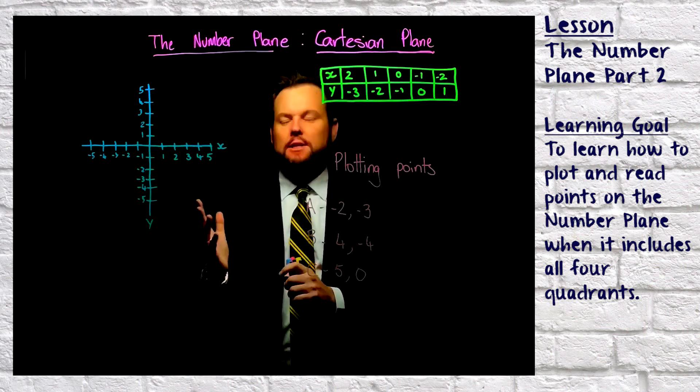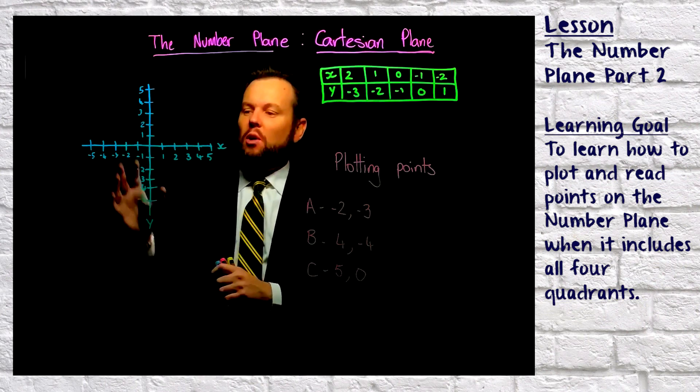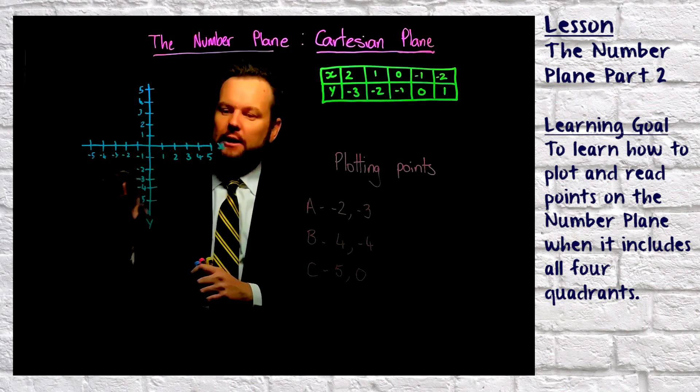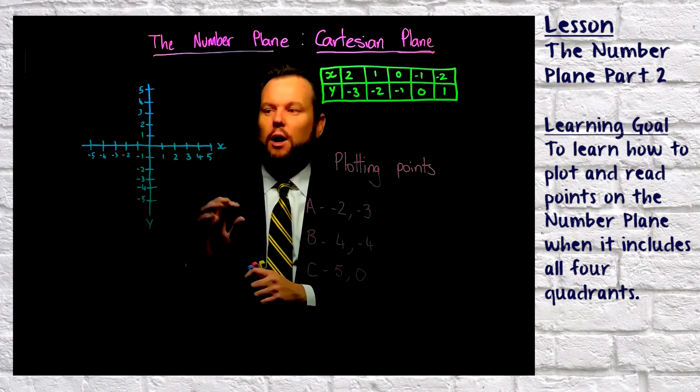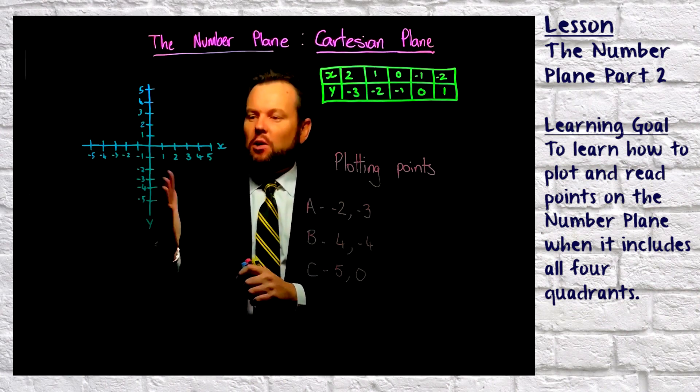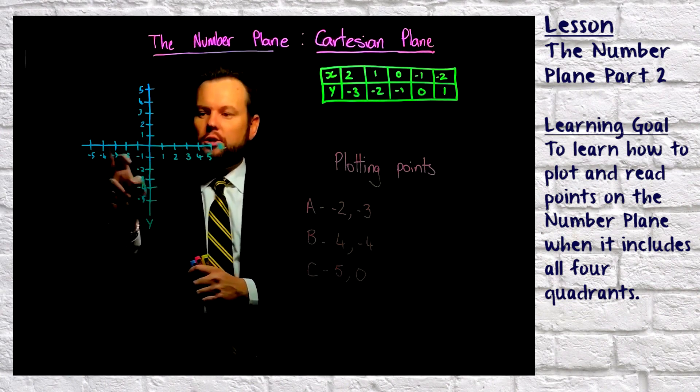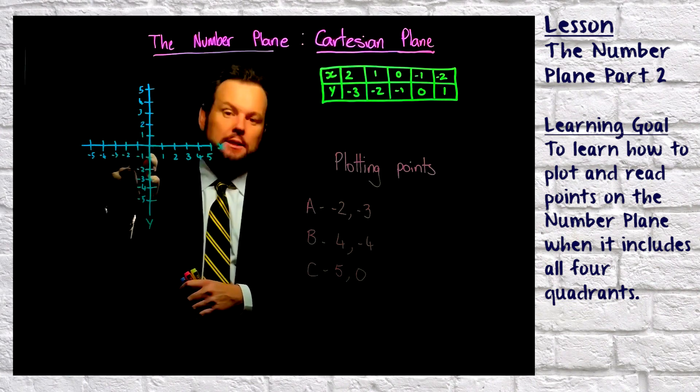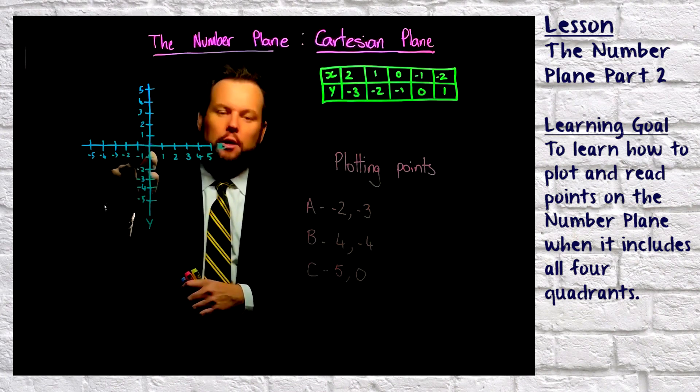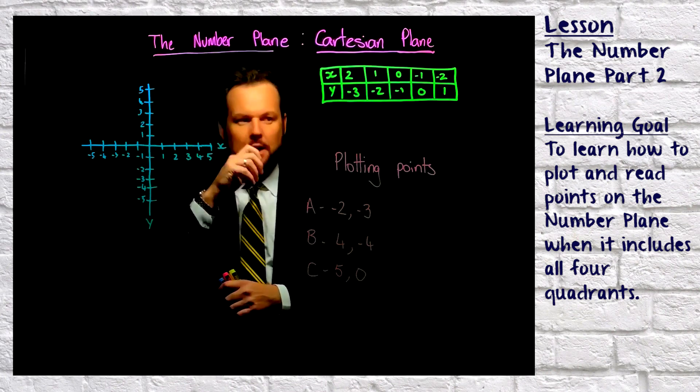So in the first lesson we were just looking at this top right quadrant, whereas this time we're looking at the other three quadrants as well. They include negative numbers. So x extends from the origin to the left into negatives. Likewise, y extends below the origin into negatives as well.